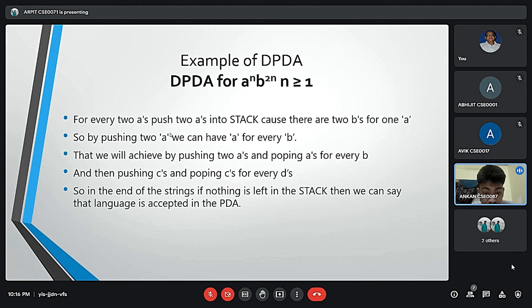Whenever A comes, push A two times in the stack, and if A comes again then do the same. When B comes, then pop one A from the stack each time. Note that B comes after A. Finally, at the end of the string, if nothing is left in the stack, then we declare that the language is accepted in the PDA.